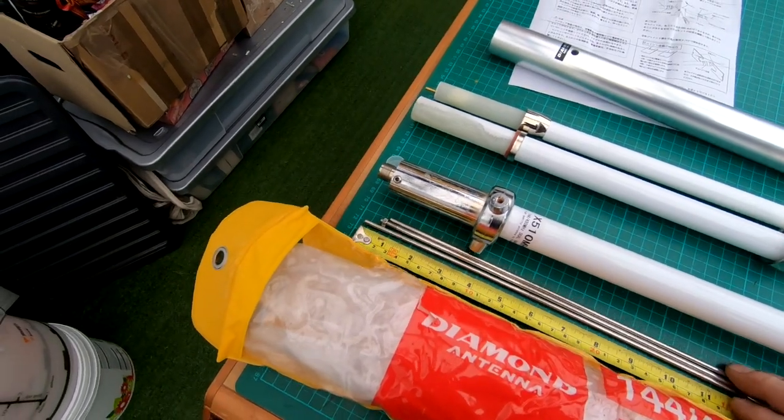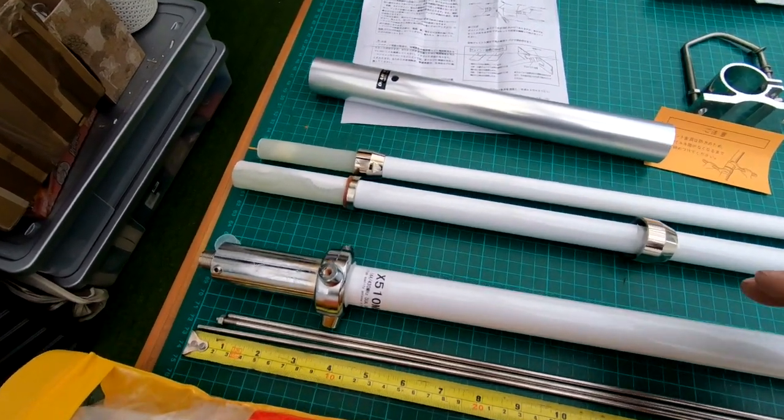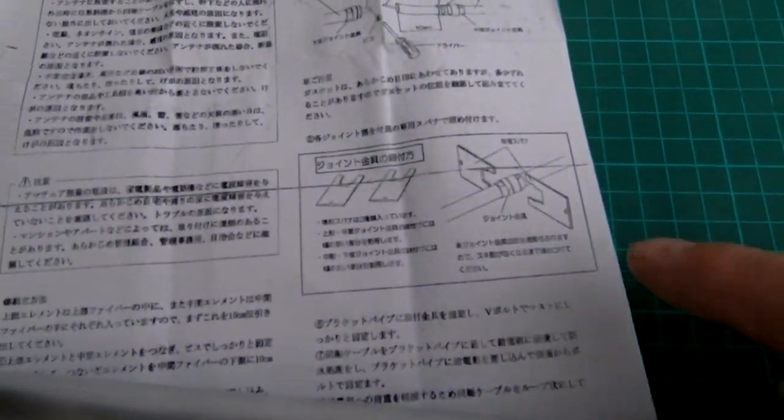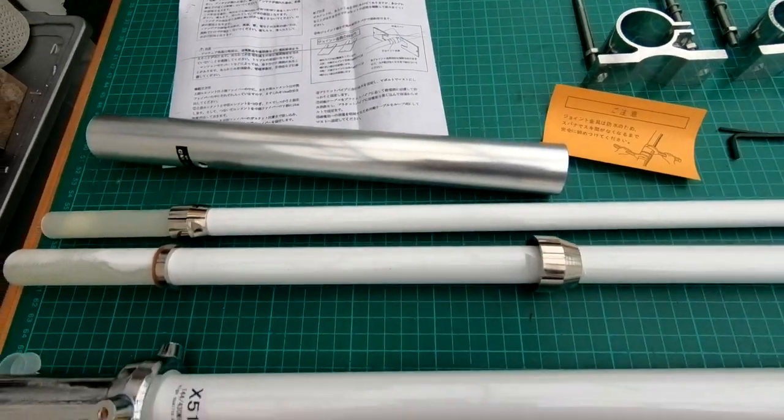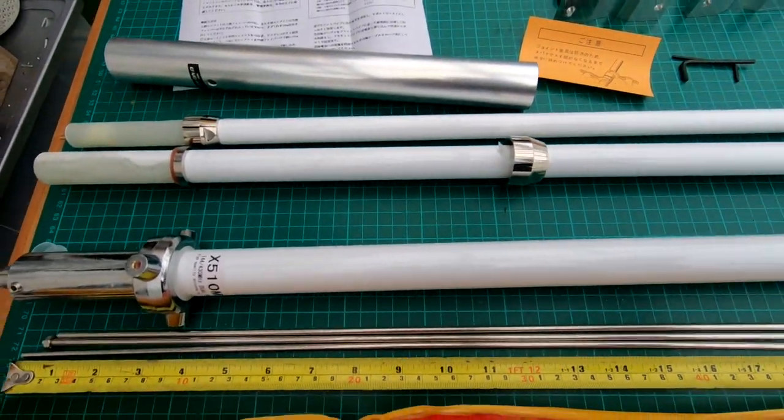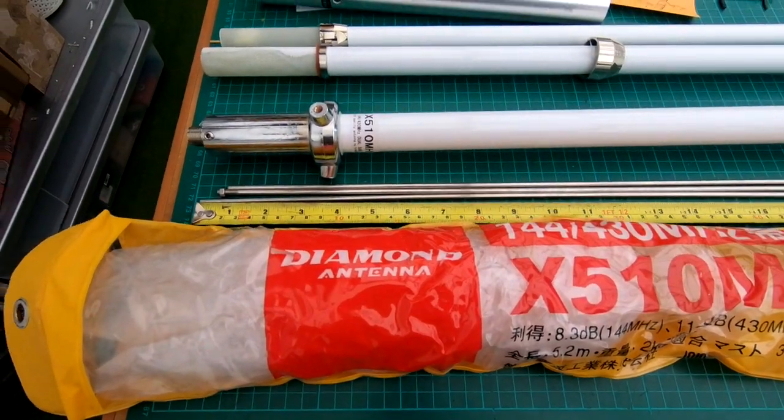What's missing is on the instruction leaflet should be two metal spanners which aren't in there. Not a major problem, they only clip on there and tighten it up. I've got spanners I could do that with.